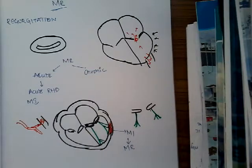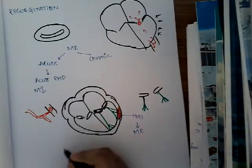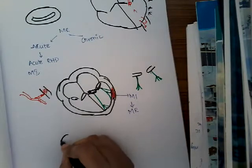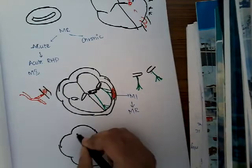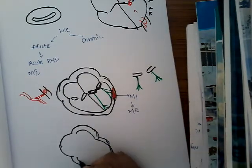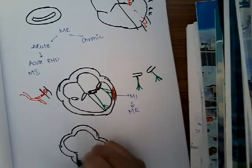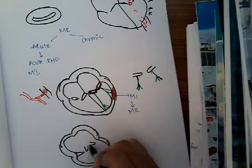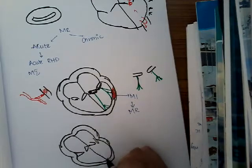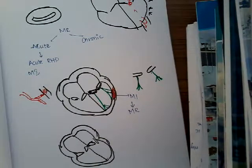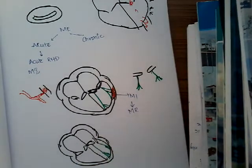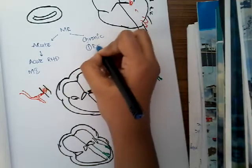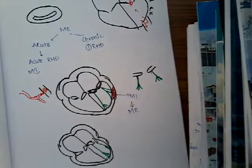Now let us learn the chronic causes of mitral regurgitation. One of the most important chronic causes is chronic rheumatic heart disease. In chronic rheumatic heart disease, the chordae tendineae may get shortened, and because of this shortening the mitral valve cannot be closed properly, thus resulting in mitral valve regurgitation.